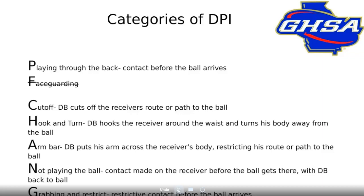What we have done is developed categories of DPI. These have been developed over the past several years — I've seen these ever since I've been calling, over a decade ago. They've appeared in Referee Magazine and manuals, so they're kind of accepted. These used to be called P.F. Chang, like the popular Chinese restaurant. A few years ago, face guarding was eliminated from the Federation rulebook, so instead of P.F. Chang, now you just got P. Chang. The categories are: playing through the back, cutoff, hook and turn, arm bar, not playing the ball, and grabbing and restricting.